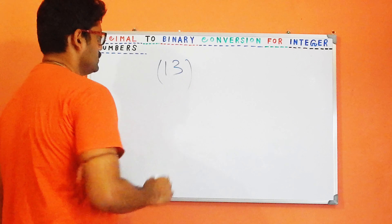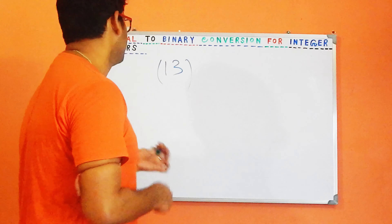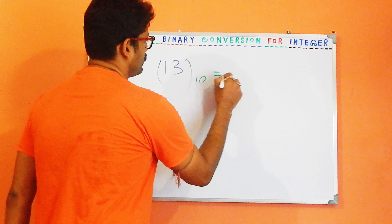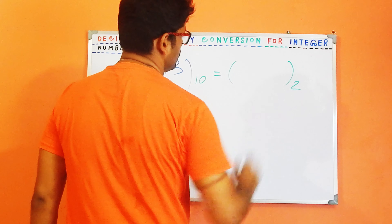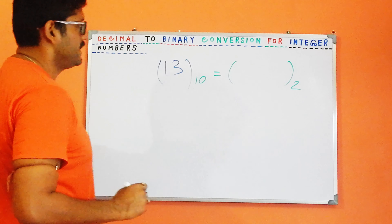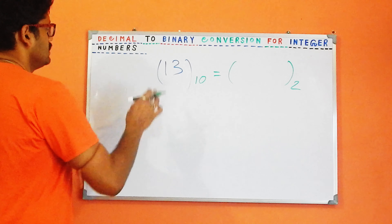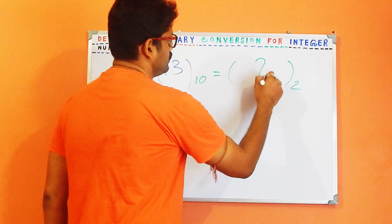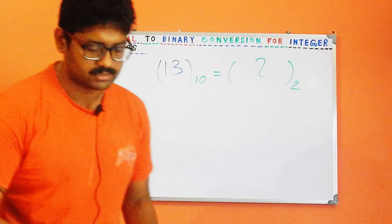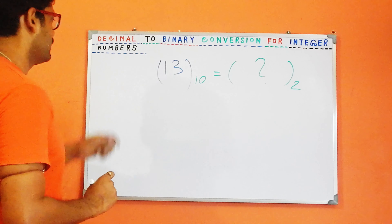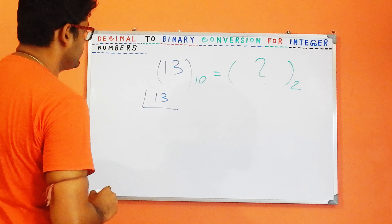Suppose we have considered a decimal number of 13. The base for our decimal number is quite naturally 10. We are trying to find out the binary form, where the base is 2. So let us convert this decimal number to its binary equivalent.